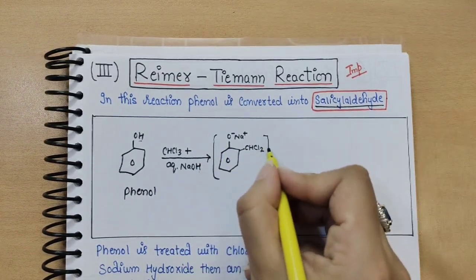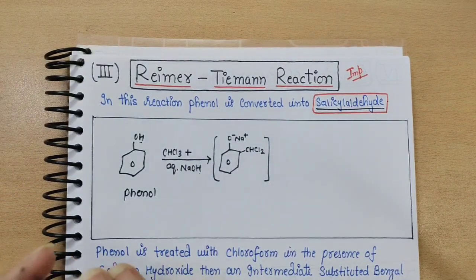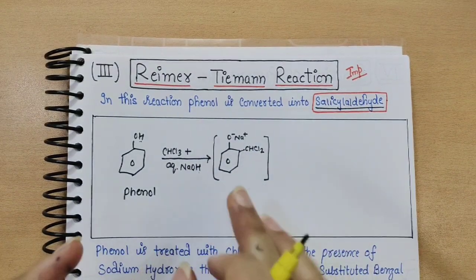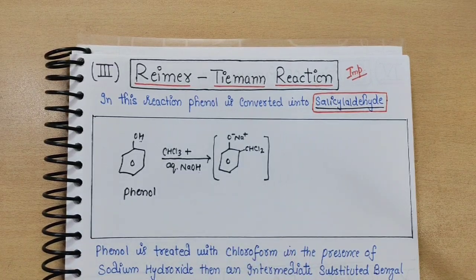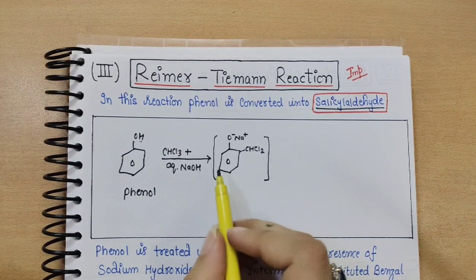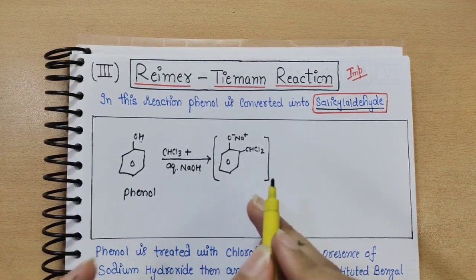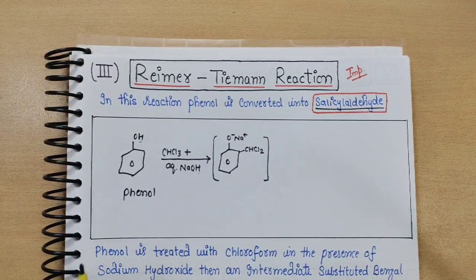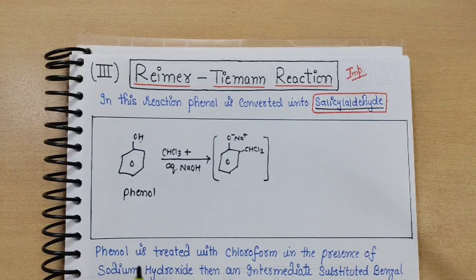This gives an intermediate compound. The key intermediate in the Reimer-Tiemann reaction is a carbene. If the intermediate is asked about in an exam, you should say carbene. The mechanism can also be skipped, but the intermediate is carbene.